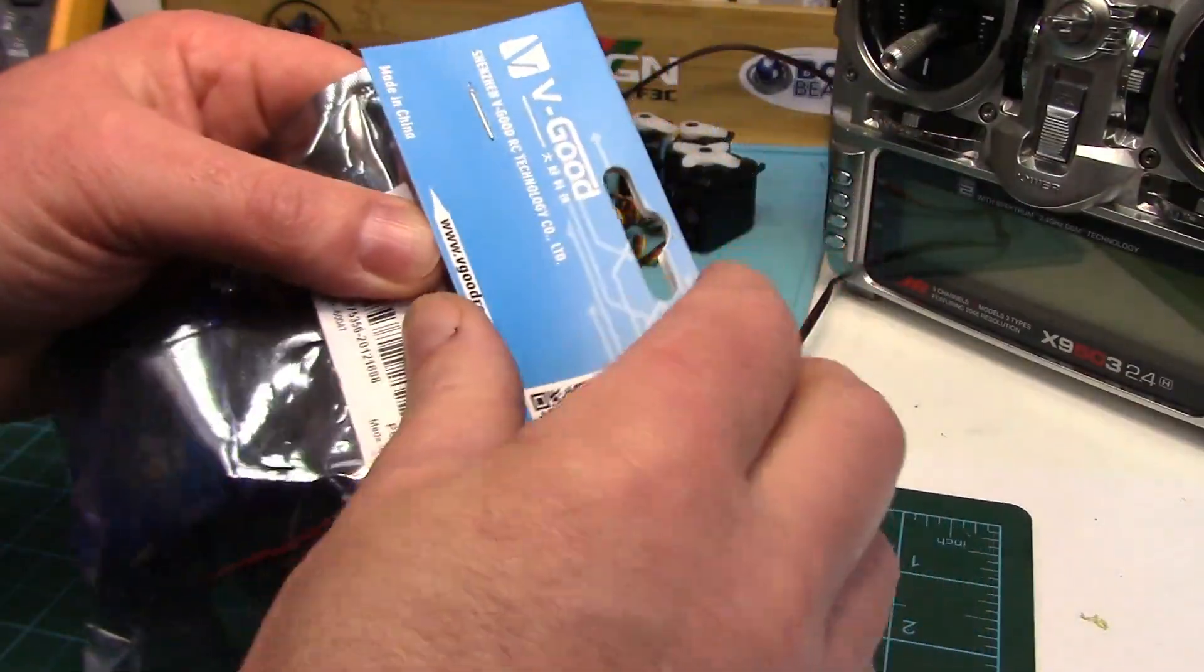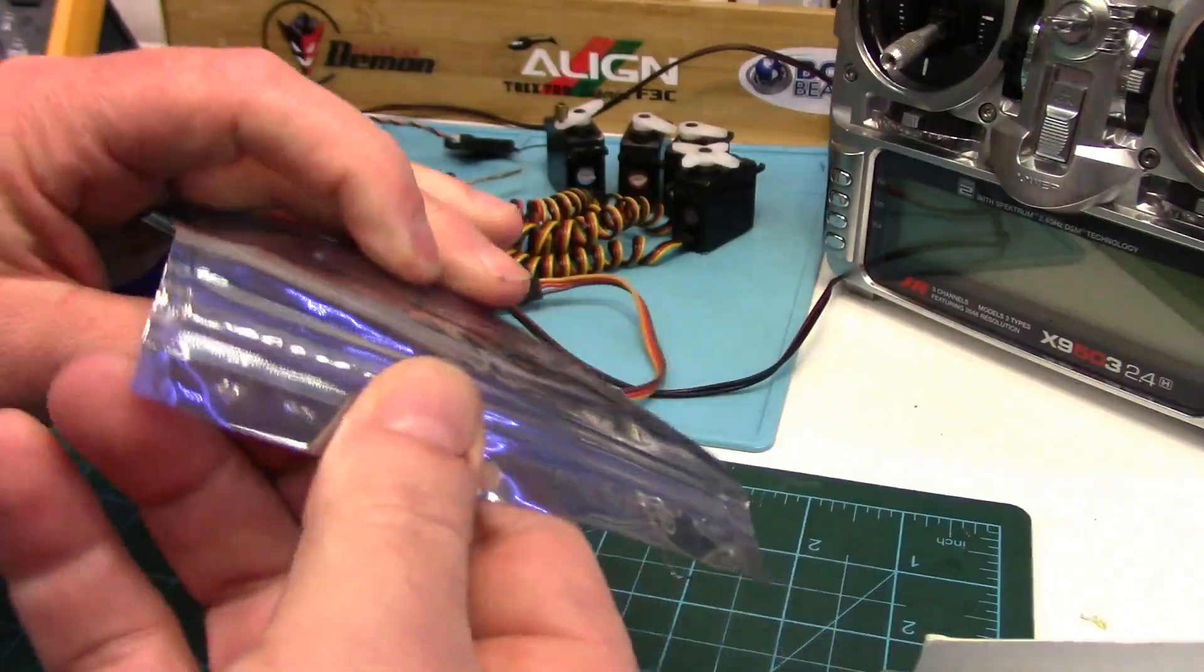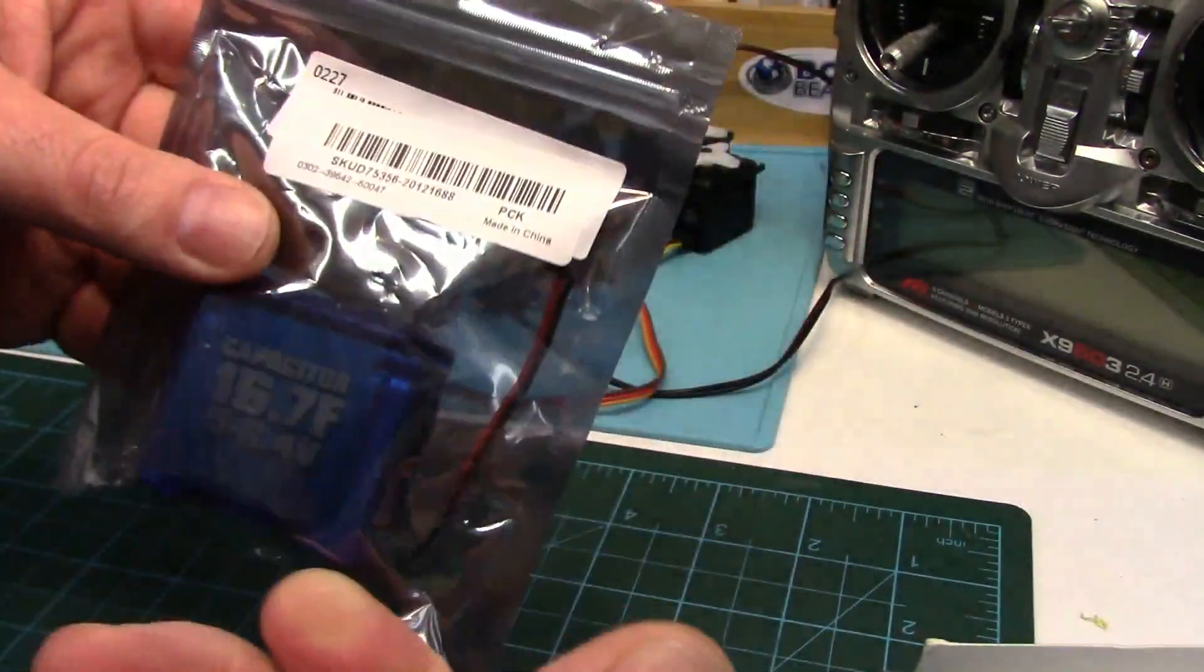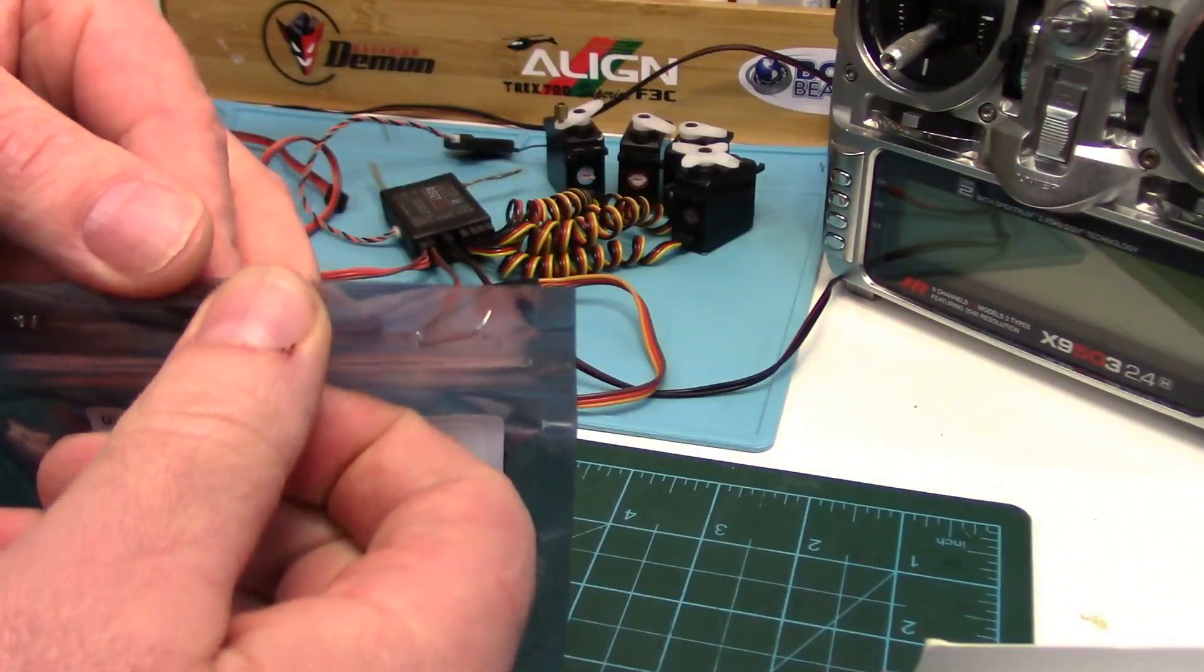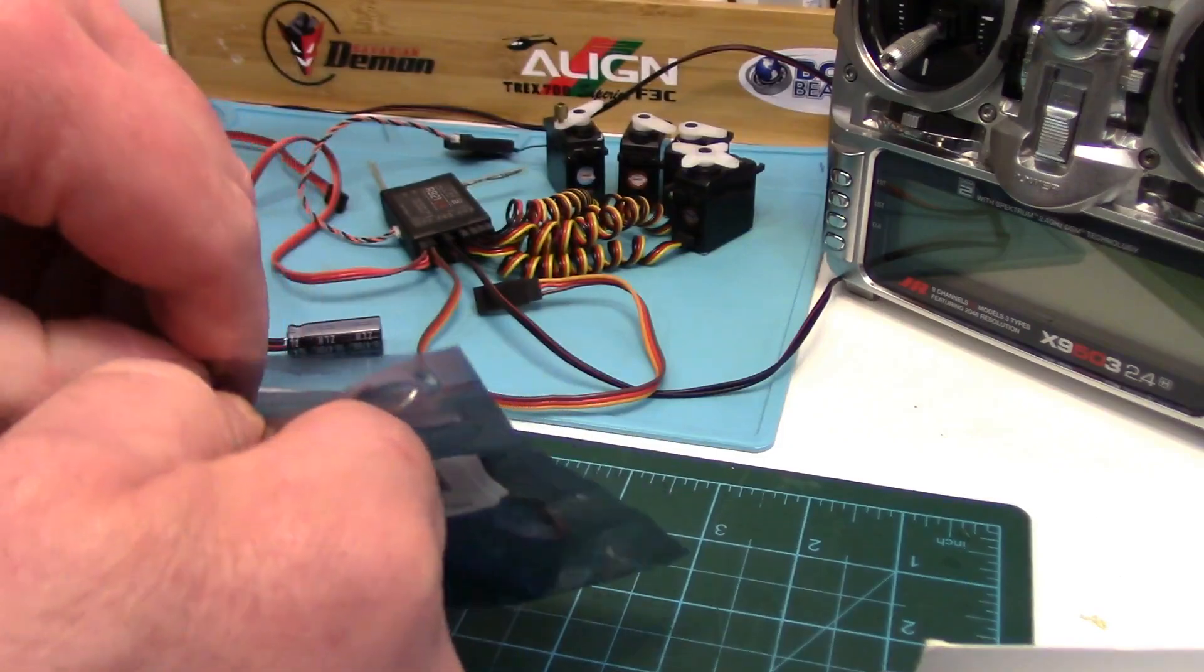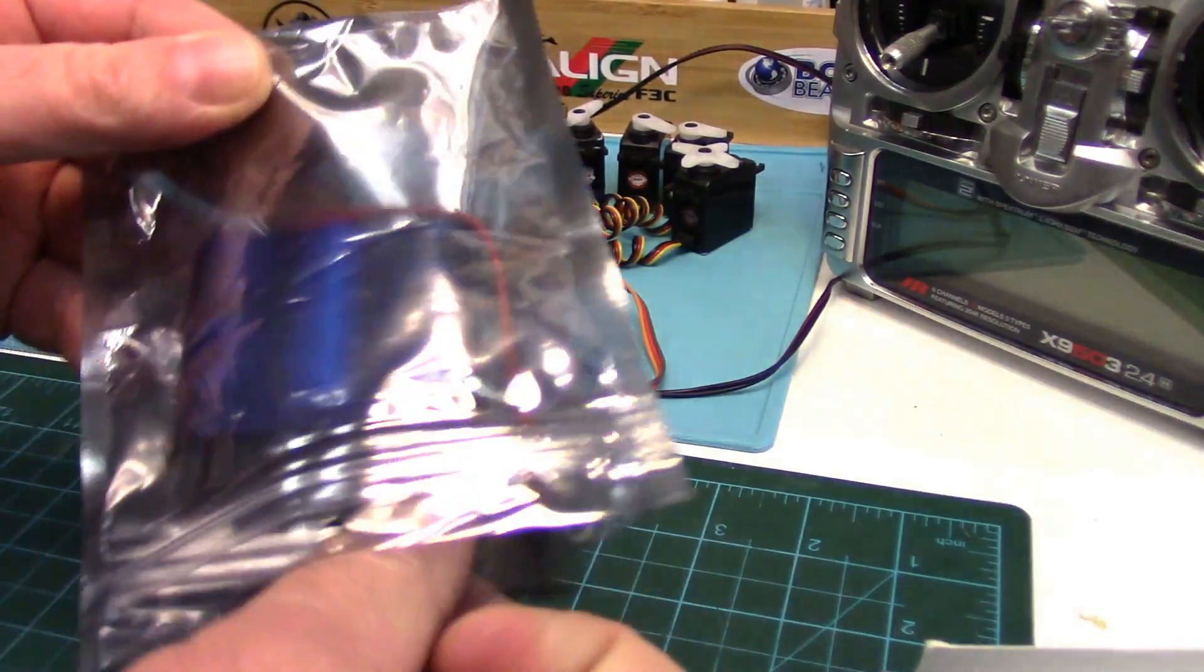Now I should mention that this doesn't power the main motor or anything on your aircraft. This is just to power the electronics so you could do an autorotation or glide the airplane in. At least that's the theory. Is this a solution looking for a problem, or does it actually work?